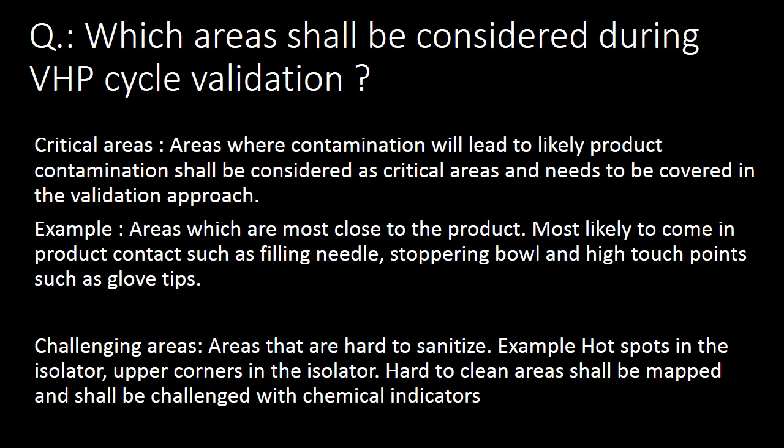Parts most likely to come into product contact — such as filling needles, tumbling bowl, and high touch points such as glove tips — shall be considered as critical areas. For challenging areas, areas that are hard to sanitize, such as hot spots in the isolator and upper corners, shall be considered as challenging areas. Hard-to-clean areas shall be mapped and challenged with chemical indicators.